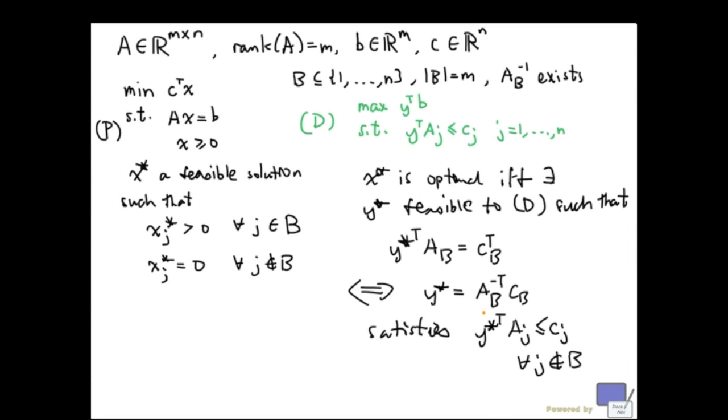So what happens if this y star violates some of these things? And this is what we are going to look at next. Suppose that y star transpose AK is bigger than CK for some K not in B.